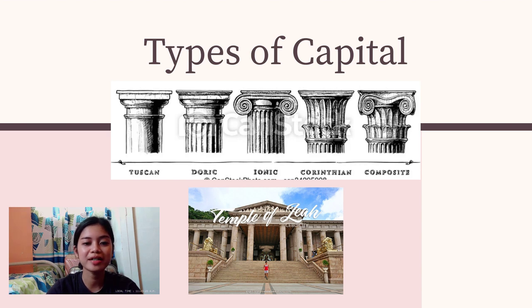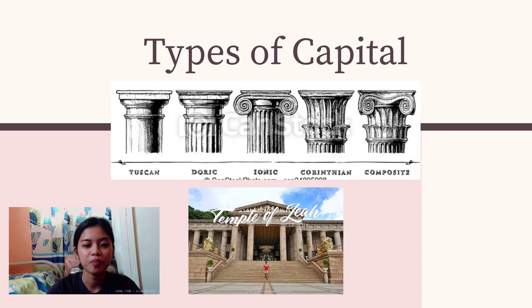During the renaissance, architects aimed to use columns, pilasters, and entablatures as an integrated system.